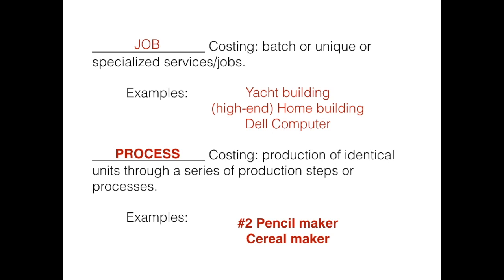A cereal maker, for example — Lucky Charms, one of my favorite cereals — they are produced over and over again and the process does not change. Someone doesn't call in and say I want a special box of Lucky Charms. So this is the difference between job costing and process costing.